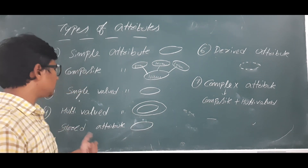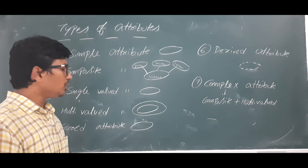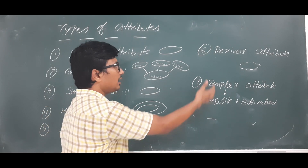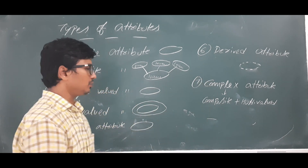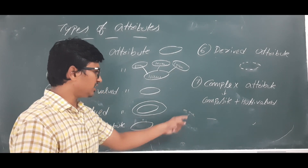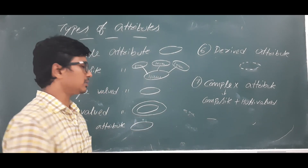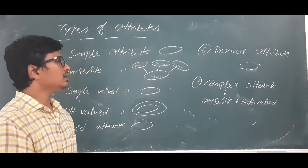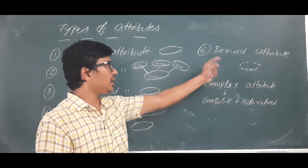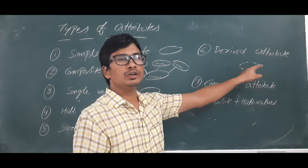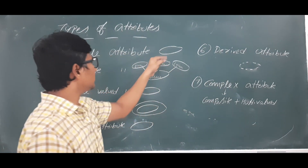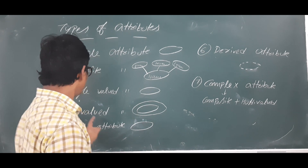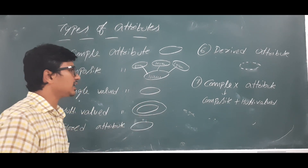If I already have age, I don't need to store date of birth, because from age someone can derive date of birth. So there's no need to have another attribute called date of birth. The derived attribute is represented as a dotted oval, whereas the regular attribute is a simple oval. Composite attributes and multi-valued attributes have their own representations as well.